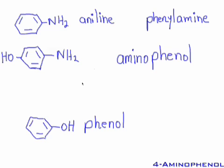This molecule is called an aminophenol. Numbering from the priority group — always starting at one for the OH — the lowest number we can assign to the amine is four, counting 1, 2, 3, 4. So this is 4-aminophenol. 4-aminophenol is much better than 4-hydroxyaniline. However, if you said 4-hydroxyaniline on a test, you would get part marks — it's just not the best name.